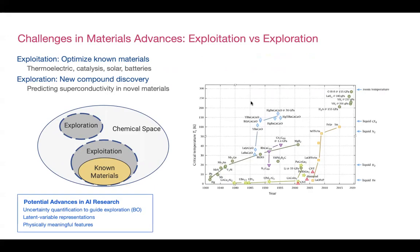Another difficulty is revealing the underlying physics — even a perfect model may not tell you why it's giving a certain result. There is a trade-off between exploitation (looking where you already have a good idea of the optimum) and exploration (looking where uncertainty is highest). Known industrially applicable materials — thermoelectrics, catalysis, solar, batteries — favor exploitation. New compound discovery like superconductivity is in the exploration regime, where uncertainty is highest and it's hardest to push the limit.